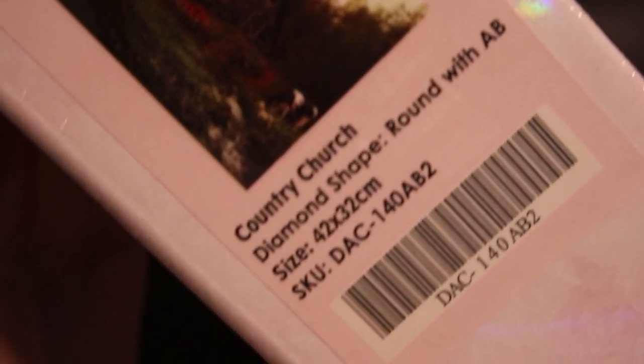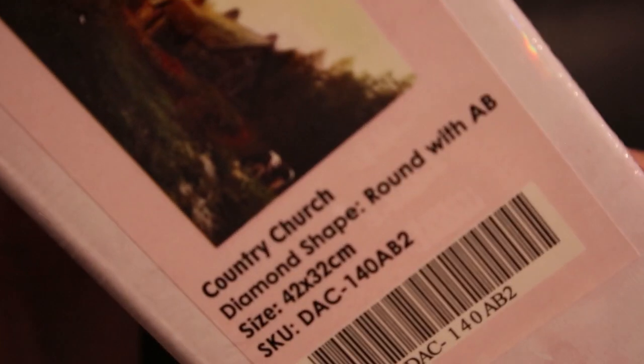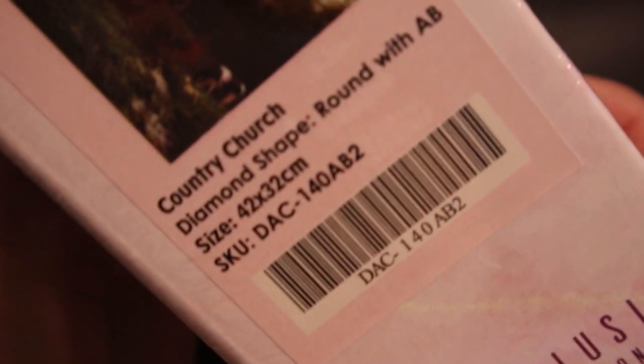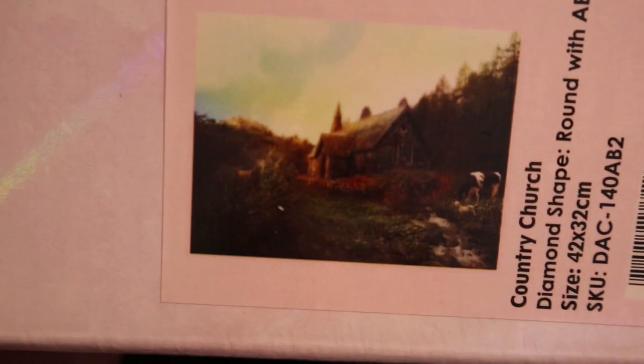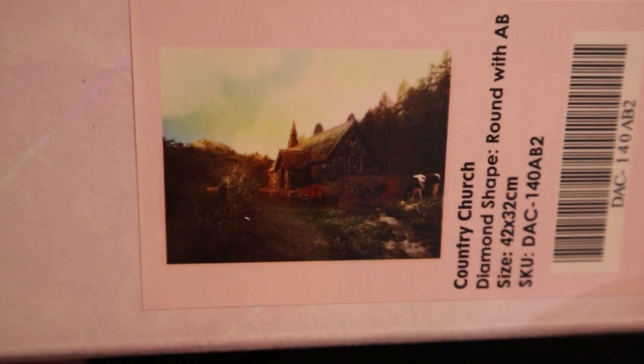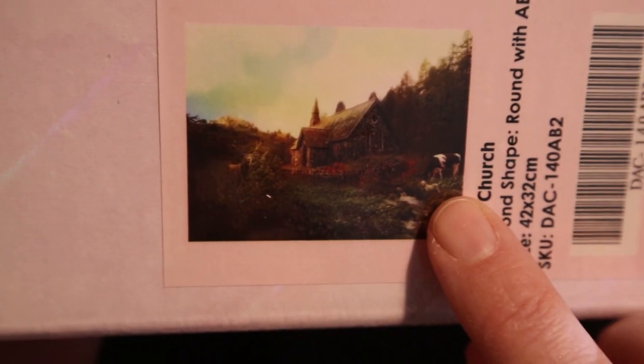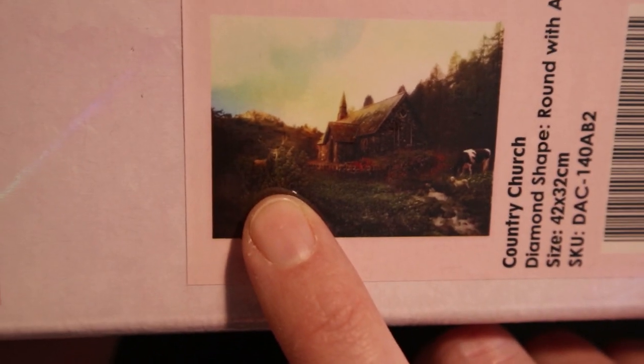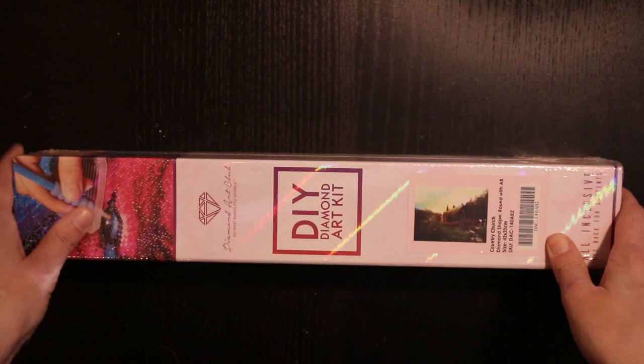It's Country Church, or Church on the Hill. It doesn't look like a church but maybe there's a little tower there. You have a cow and a dog and there's like a deer in the woods. It's 42 by 32 centimeter.